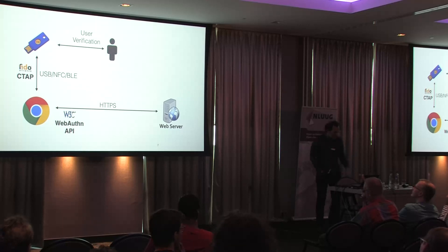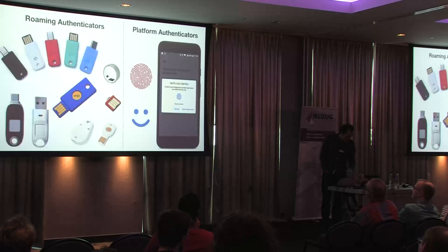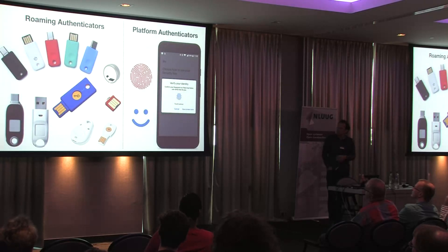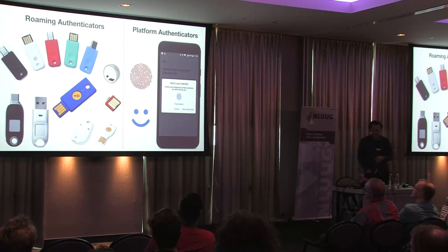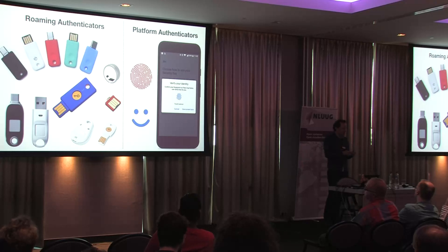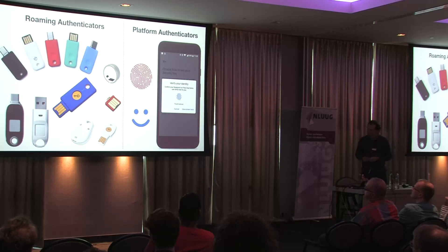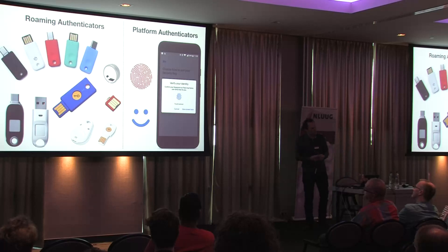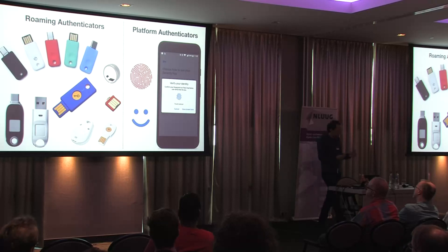Let's zoom in on these tokens. There are actually two types: roaming authenticators and platform authenticators. Roaming authenticators are small USB devices, similar in appearance to a plain old YubiKey, but with completely different inner workings and many usability and security benefits. The nice thing about the CTAP protocol is that it's an open standard, so anyone can build these tokens, and today there are several vendors producing them.